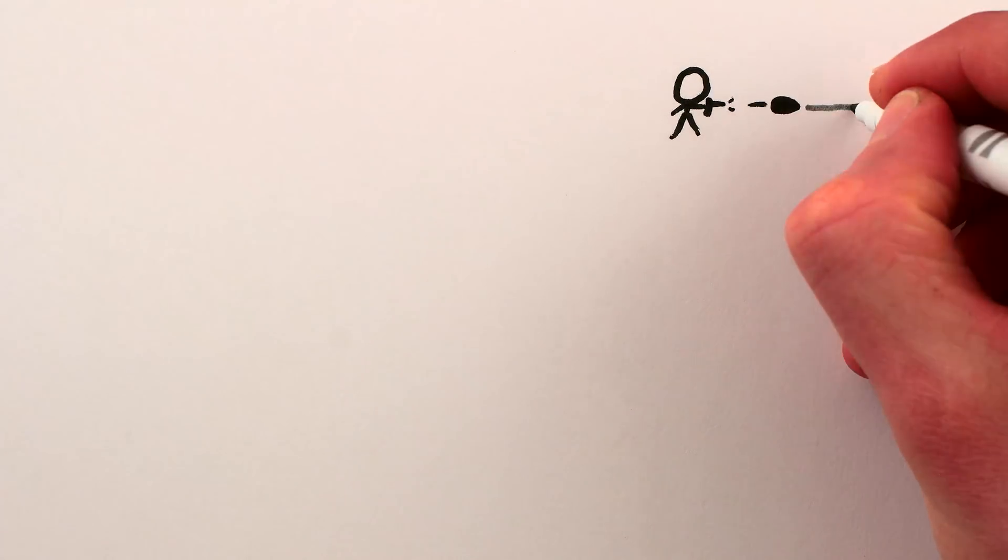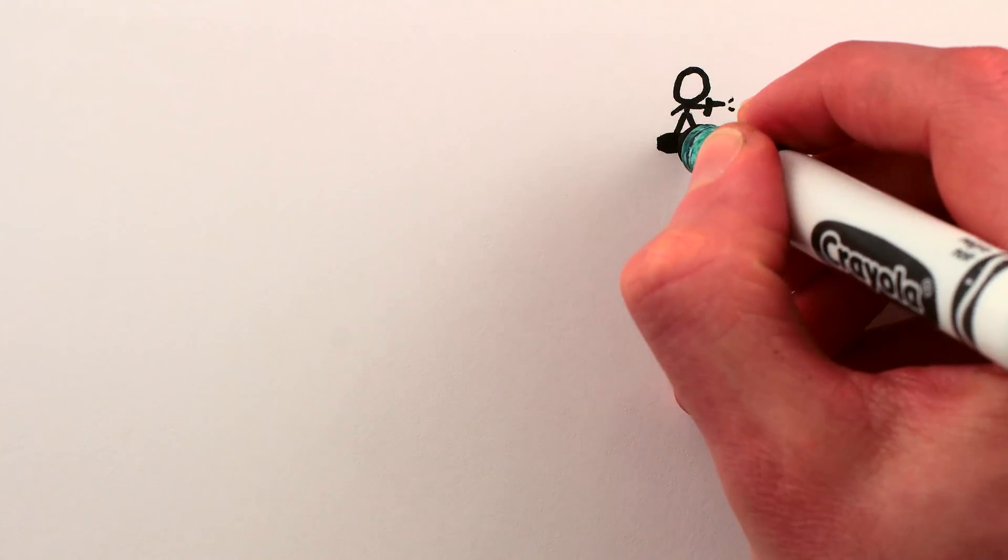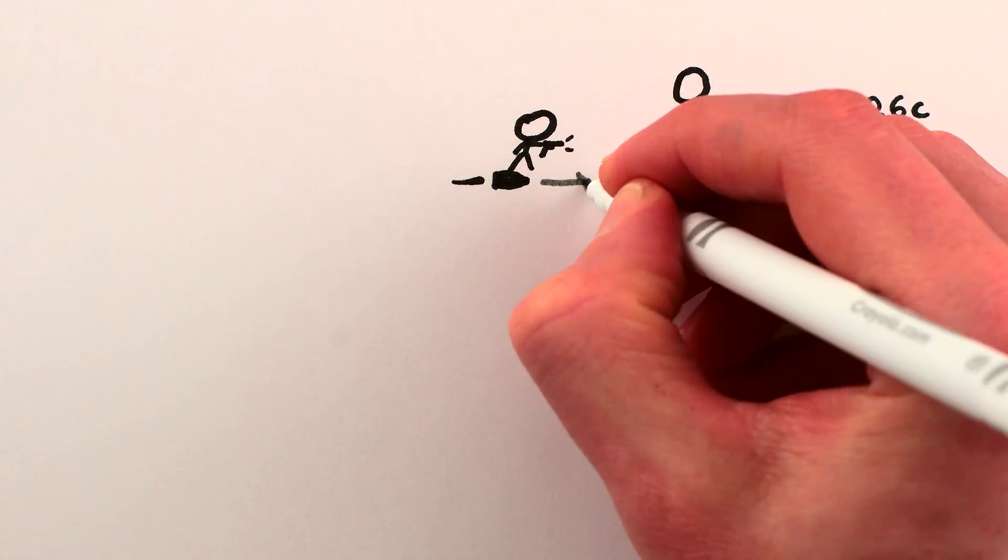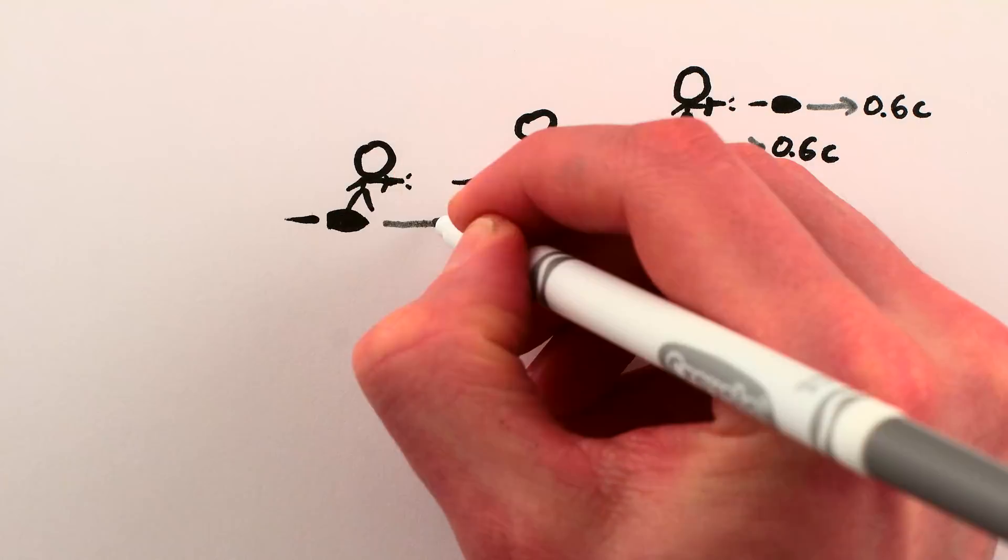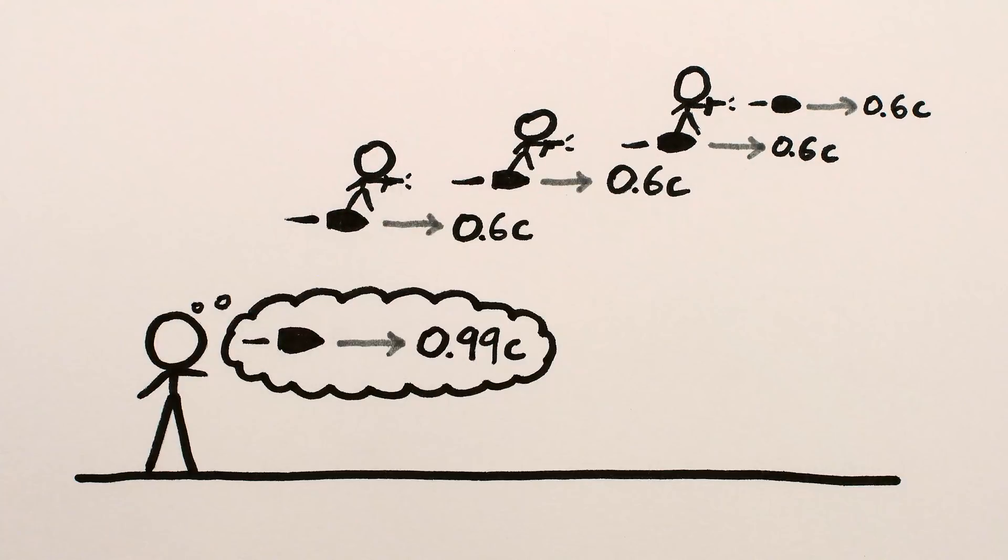So even if we shot a death pellet going 60% the speed of light from a death pellet going 60% the speed of light from a death pellet going 60% the speed of light, and so on, the final speed would be close to, but not quite, the speed of light, because of how relative velocities combine in our universe.